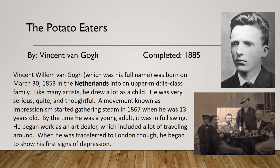Let's talk about Vincent van Gogh's life, because it's interesting to get into the minds and lives of these artists, especially some of the ones that had a rough time. So you don't think of him just as an idealistic painter — this person had a life and troubles of his own. Vincent Willem van Gogh was born on March 30, 1853, in the Netherlands, into an upper-middle-class family. Like many artists, he drew a lot as a child; he was very serious, quiet, and thoughtful. A movement known as Impressionism started gathering steam in 1867, when he was 13 years old.